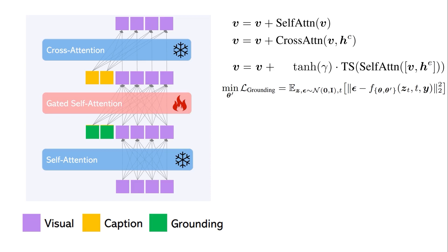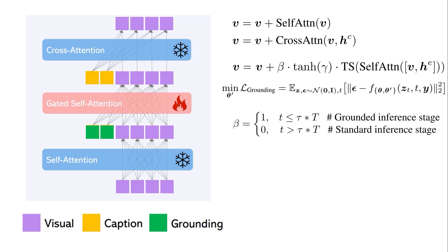There's one element in the gated self-attention formula: the beta parameter, which is always set to 1 during training. But at inference time, they notice that keeping beta as 1 throughout leads to lower generation quality, because forcing the grounding constraint can sometimes produce degraded images. To improve this, they set a scheduler for beta: after a certain point in the denoising steps, beta is changed to 0, removing the bounding box constraint. This makes sense — at the initial denoising steps we want to establish where objects are located, but after some steps we no longer need that constraint.